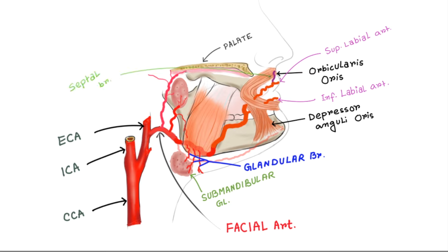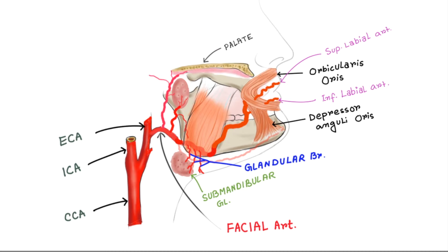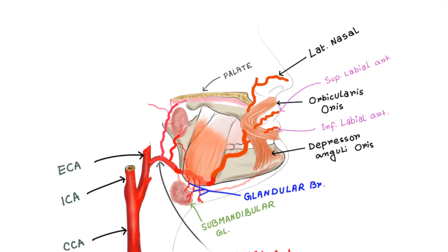The superior labial artery is large and more tortuous; it supplies the upper lip and gives off an alar branch and a septal branch, which ramifies anteriorly and inferiorly in the nasal septum. The lateral nasal artery supplies the dorsum and alar of the nose and anastomoses with the lateral nasal artery of the other side; sometimes this artery may be replaced by a branch from the superior labial artery. The angular artery is the terminal part of the facial artery.